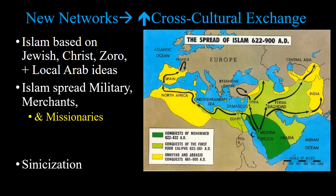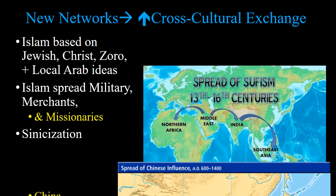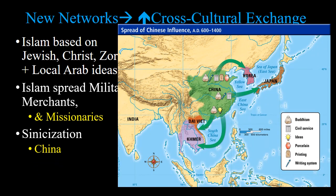You also have Sinicization — Sino or Sina means China — meaning China is spreading their cultural and language practices, Confucianism, etc., to different parts of East and Southeast Asia. We see this with Japan adopting a Chinese alphabet and Confucian practices, Korea doing the same, Vietnam doing the same, et cetera.